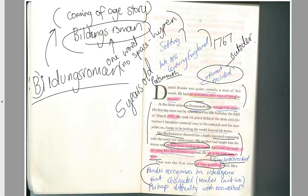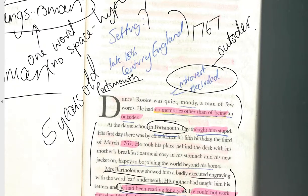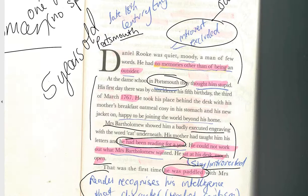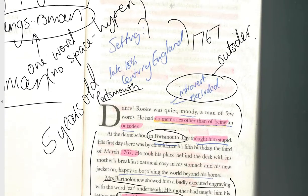The novel is set in the late 18th century — the 1700s — and begins in 1767 when Daniel Rook is five years old. I'm going to go through Part One and point out a few things I think are important. Feel free to pause the video at any point to look at the annotations I've made and things I've highlighted.